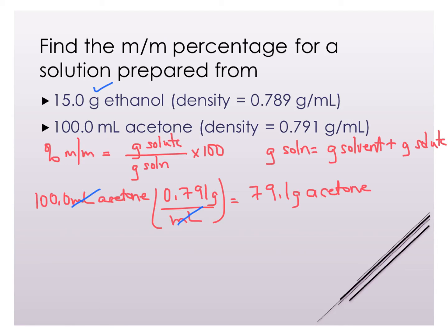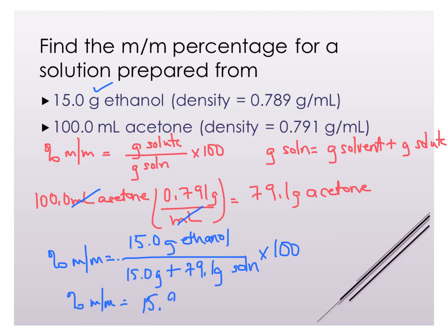So now I can plug those into my original equation which was percent by mass equals grams of solute, which is my 15 grams of ethanol, and I'm going to divide that by the total volume of my solution which will be the 15 grams plus 79.1 grams for my solution, because remember the solution includes both, and then I need to multiply that by 100. So now I have 15 divided by, and I'm using my parentheses to make sure I add those two numbers together in the denominator so that I'm doing the correct calculation, times 100, and I find that the percentage by mass equals 15.9 percent.